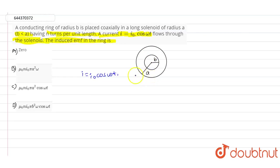The inner radius b is less than the outer radius a. According to this, in order to find the induced EMF...